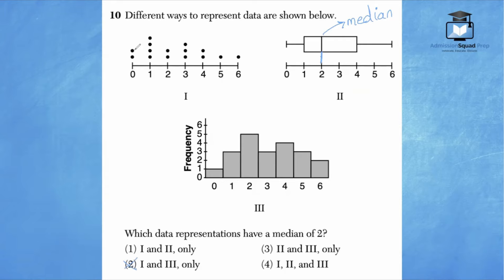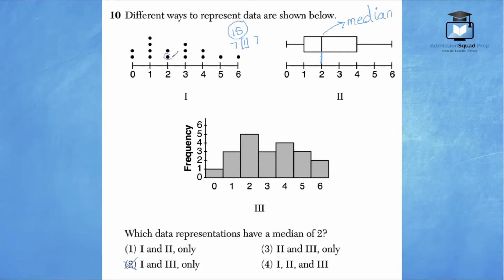Counting the dot plot, there are 15 data points total, so the median is the 8th data point. Counting from the left to the 8th point, it lands on 2. So the median for the dot plot is also 2. We can eliminate answer choice 3 because it omits the dot plot.